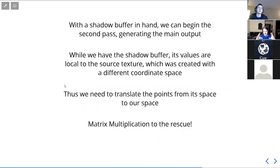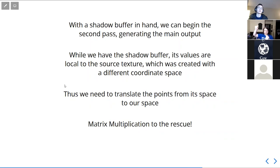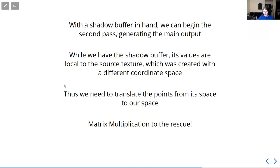Now that we have our shadow map, we can use it to figure out whether an object is in shadow or not when we render it during the normal pass. This is the second pass of the shadow mapping technique. We need to take our screen space coordinates or pixels and determine if this pixel is being occluded by this light. So we need to be able to map this coordinate from our current space into the space of the shadow map — the one that the shadow map was made in. Thus, we need matrix multiplication, specifically a change of basis.